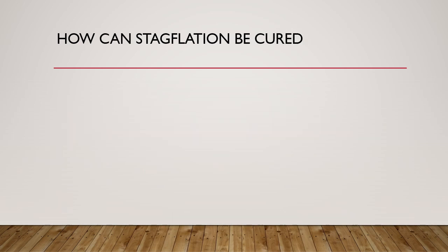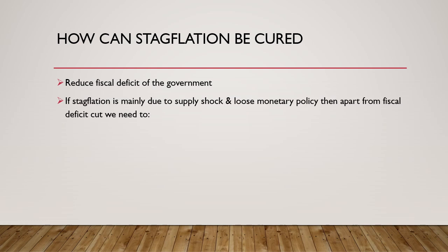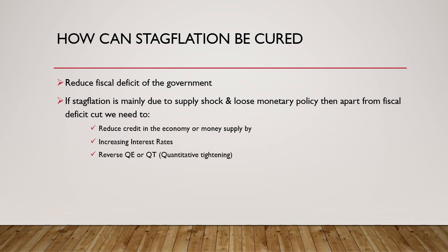So how can stagflation be cured? Simply by reversing the actions of the entities that caused it in the first place. The government should reduce its fiscal deficit. However, if stagflation is mainly due to a supply shock and the resulting loose monetary policy, then apart from cutting the fiscal deficit we would also need to reduce the credit or money supply in the economy — by increasing interest rates or what we call quantitative tightening.